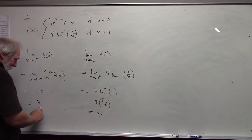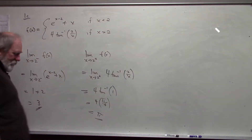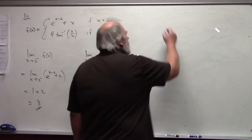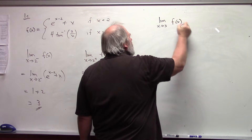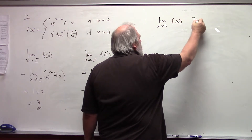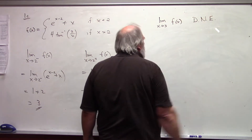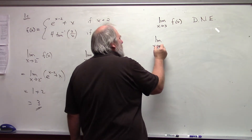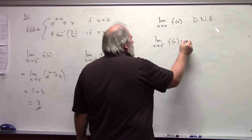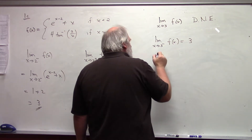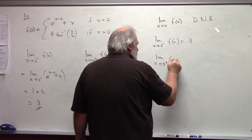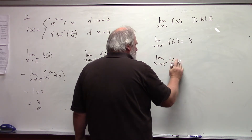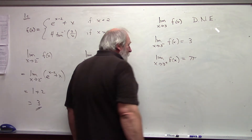Notice that although π is close to 3, they are not exactly the same. Therefore, the limit as x approaches 2 of my piecewise defined function f(x) does not exist. The limit from the left was 3, the limit from the right was π, and because these are not the same, the overall limit does not exist.